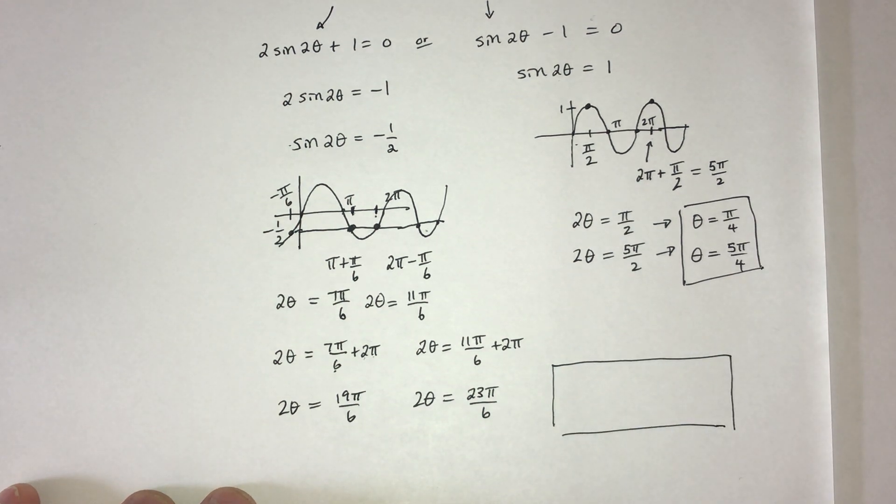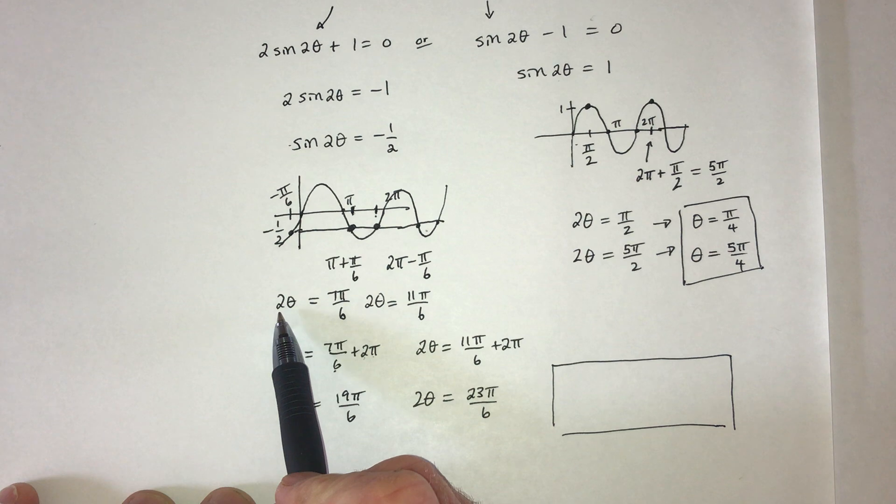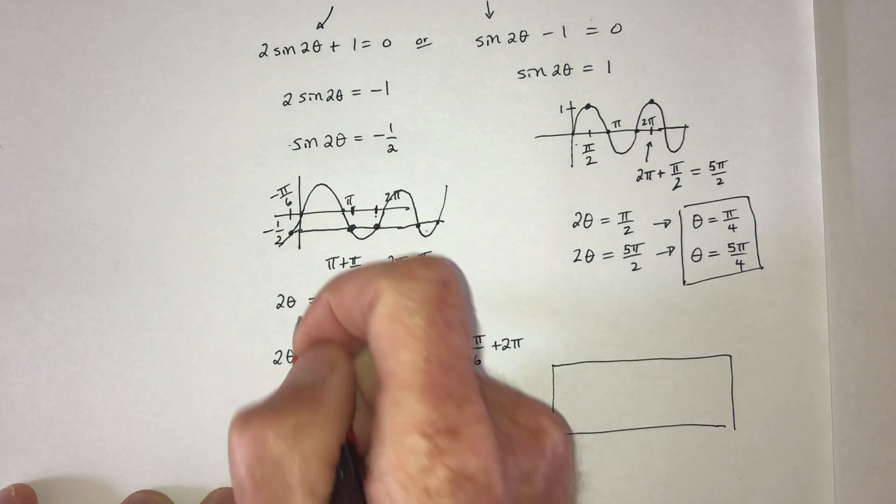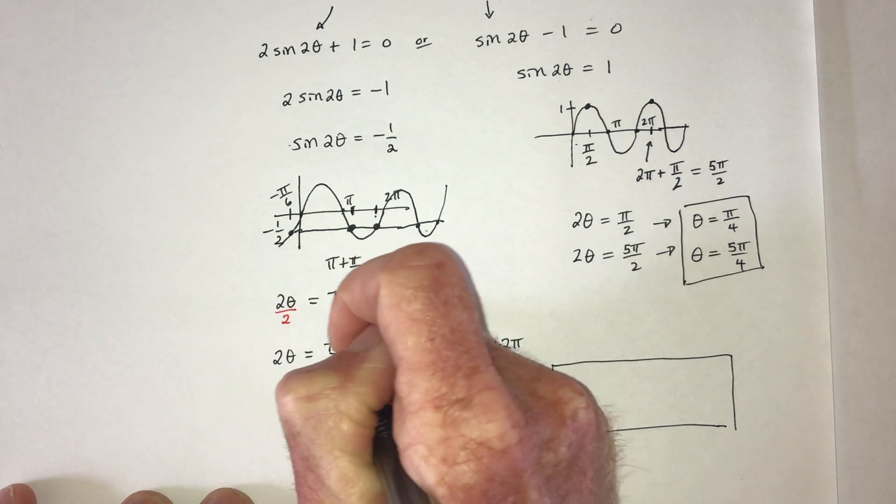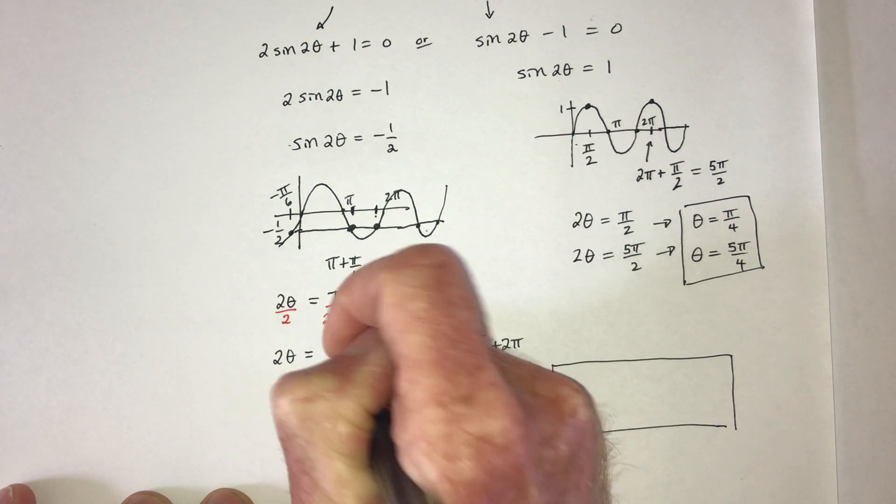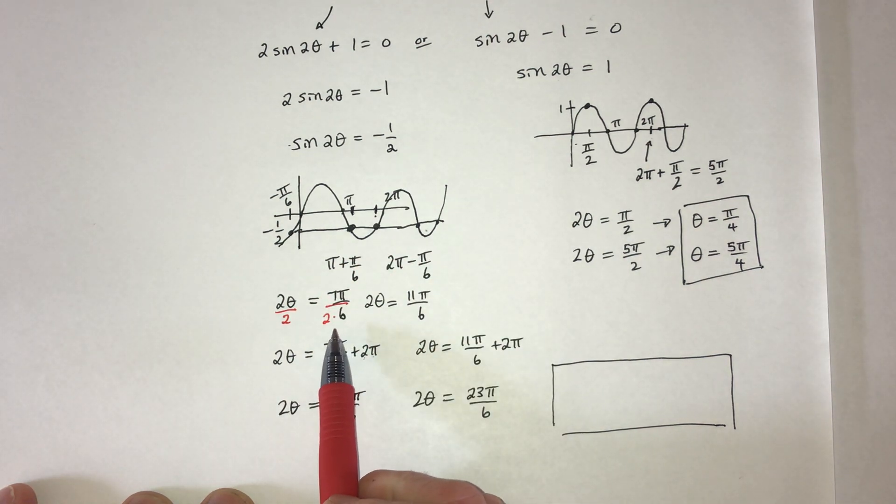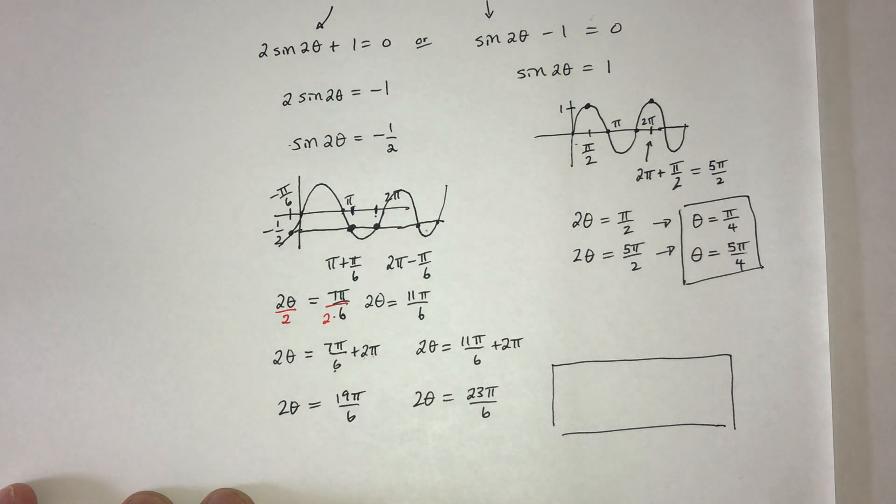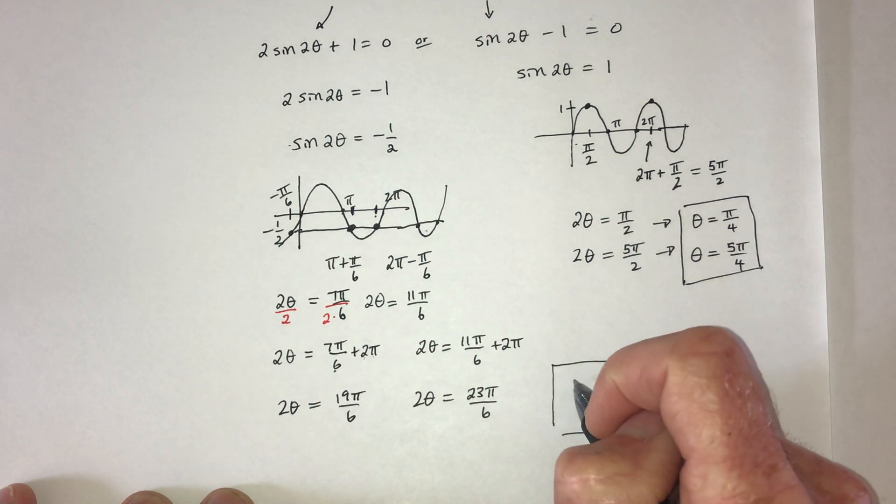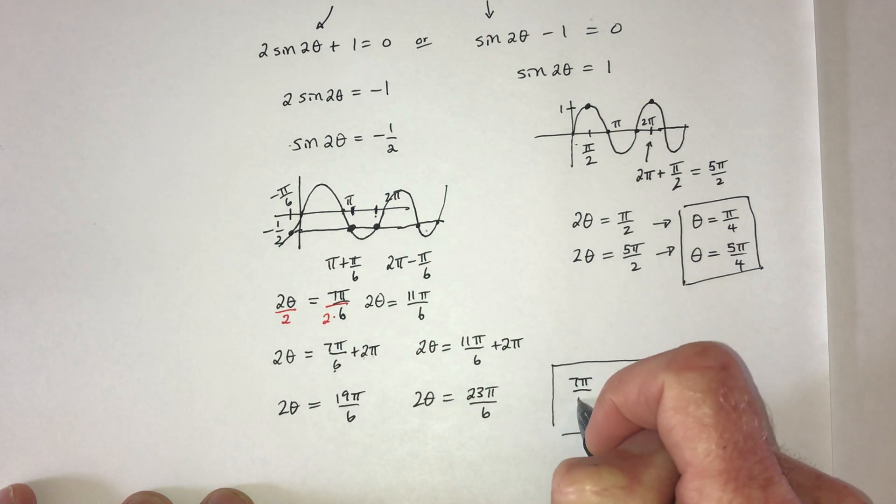And then the last thing to do is divide by 2. So divide by 2 on each side. And that means that the denominator is now going to become a 12. So we have 7 pi over 12.